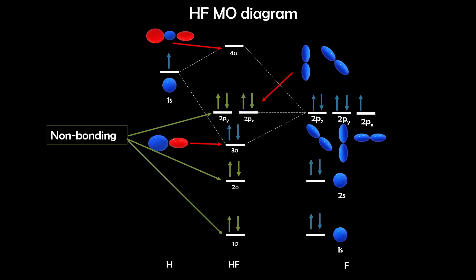One last thing about HF: because it's a heteronuclear molecule with two different elements, the usual g and u symmetry labels don't apply. Instead, we just number the orbitals sigma1, sigma2, and so on, to keep things simple.